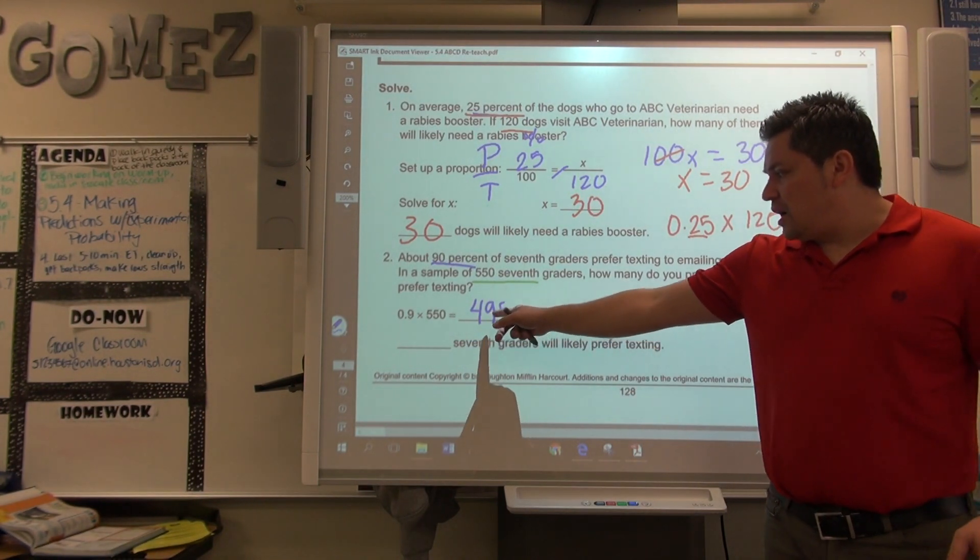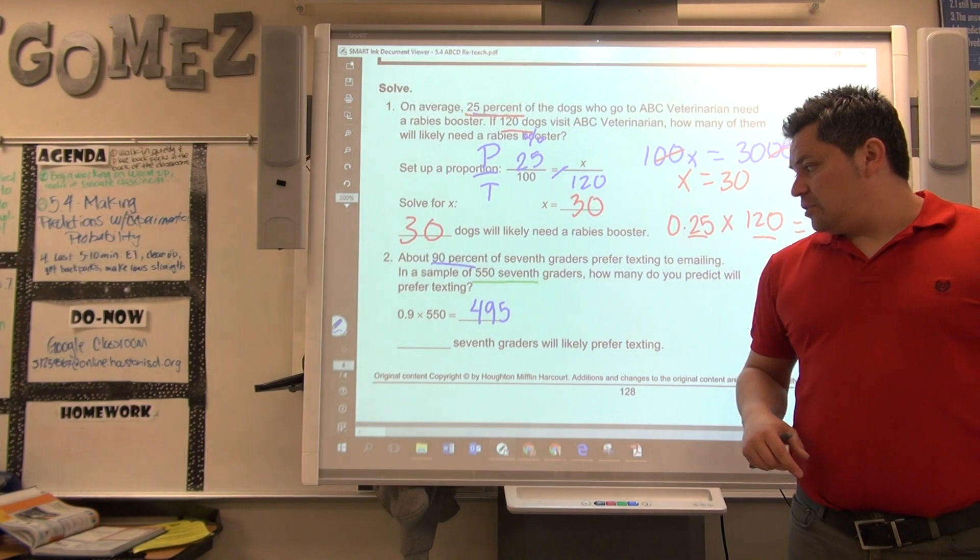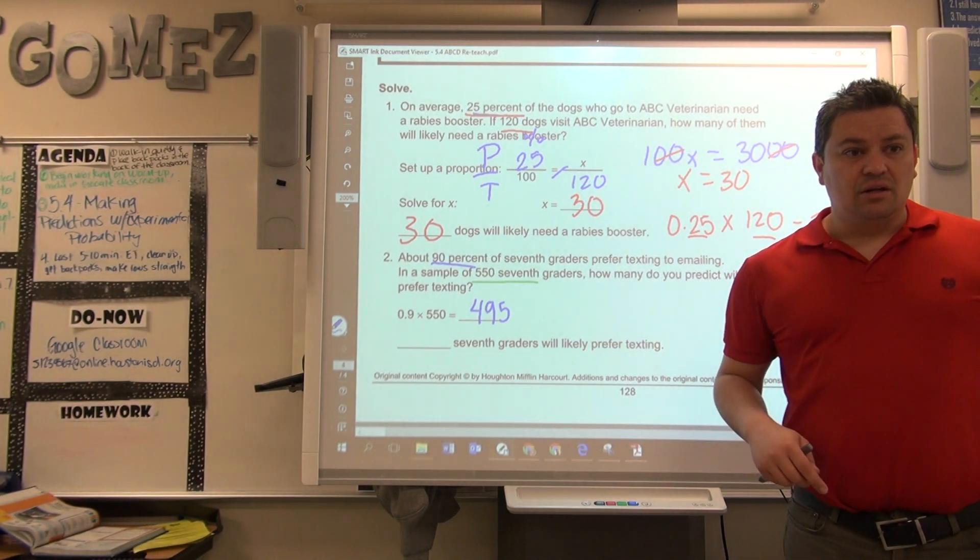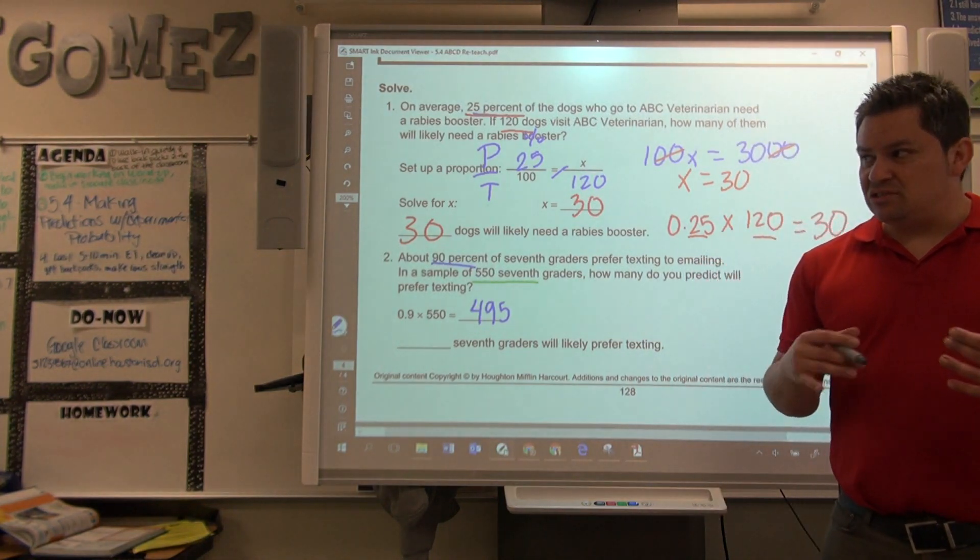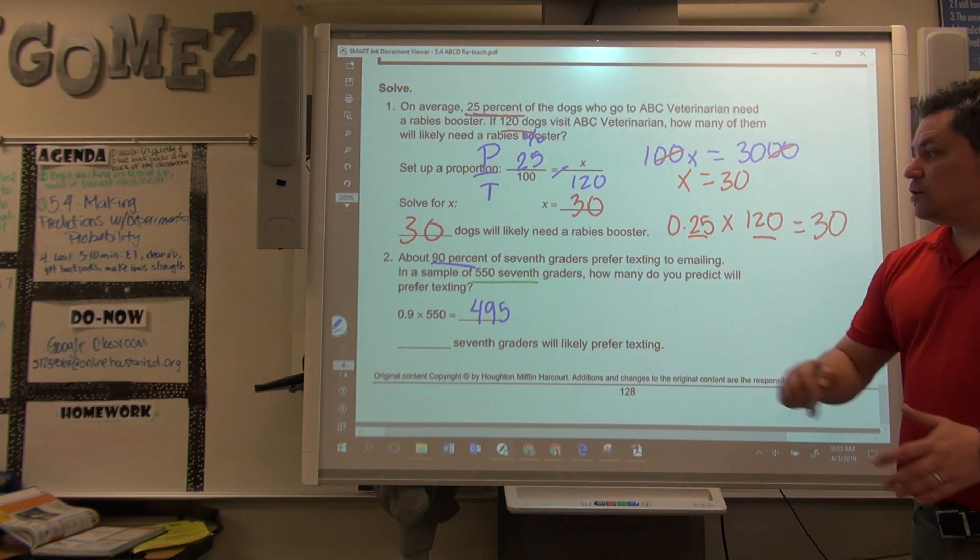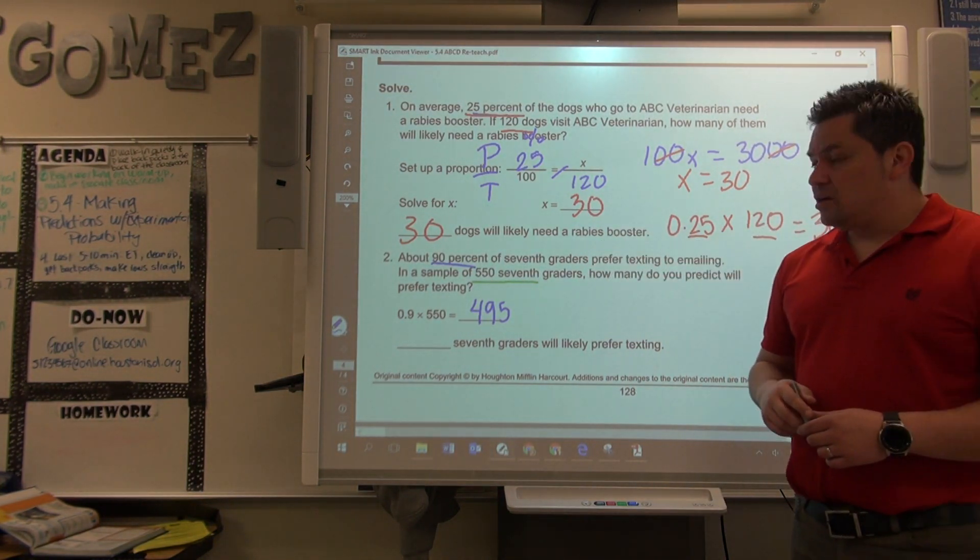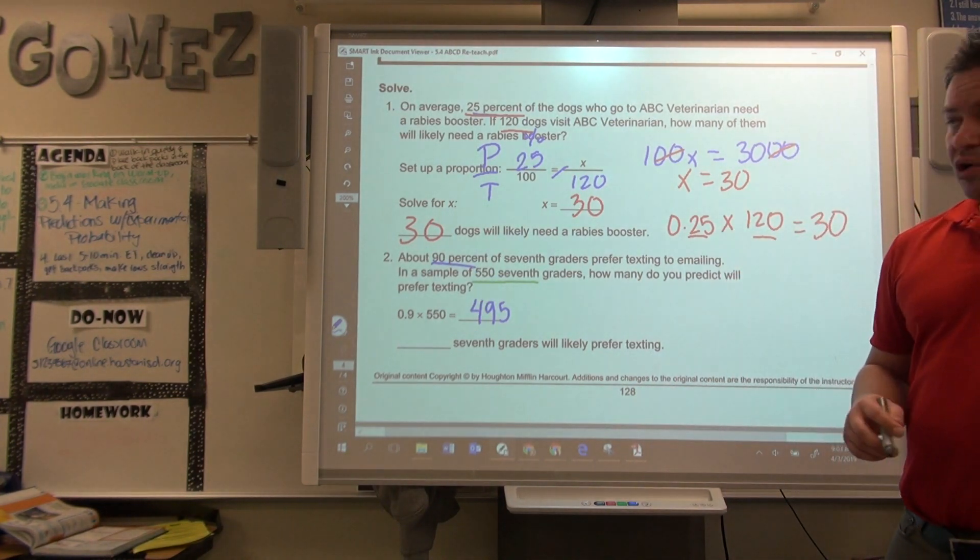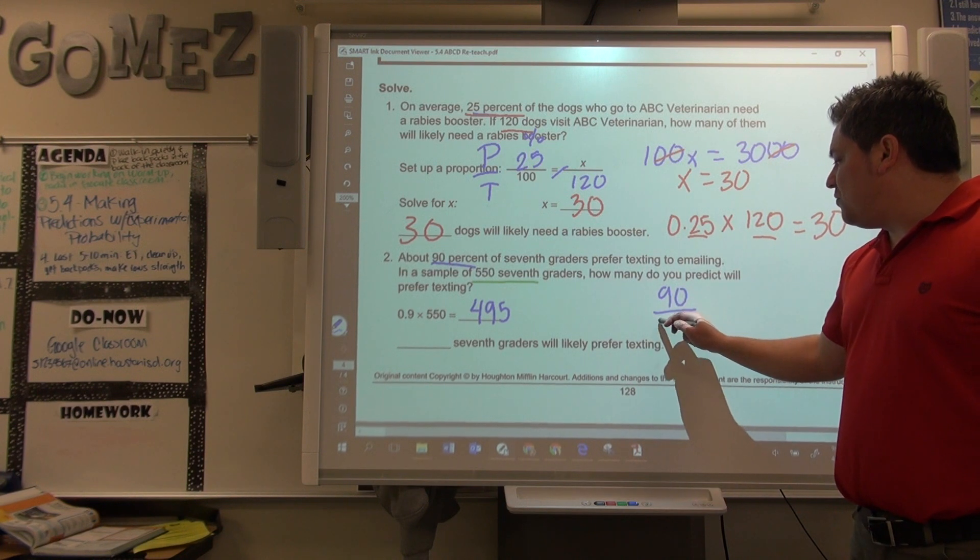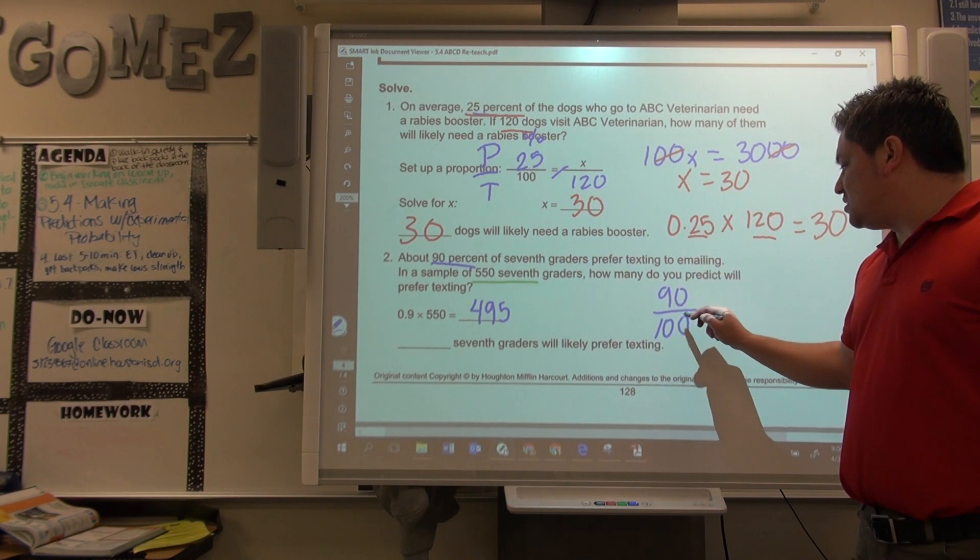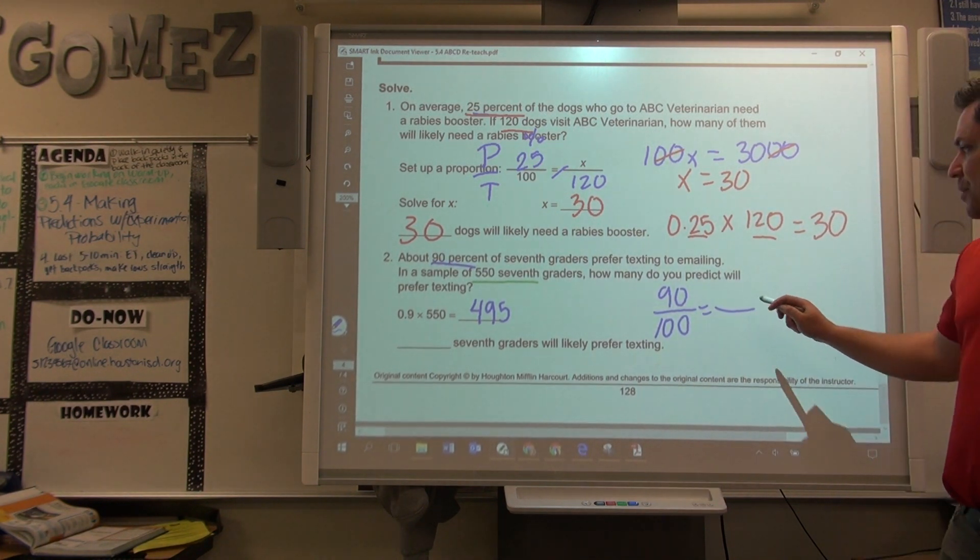Now, can it be 500? Maybe. Can it be 560? No. Because there's only 550 students. This case, you just got to play with it. Now, the cross products way, it'll be the same thing. Part over total, what my percent is? What's the percent? 90. 90 out of 100% equals what goes on top? X.